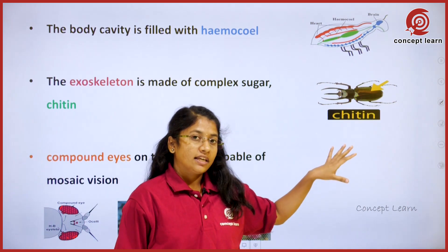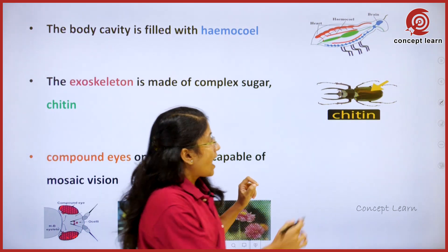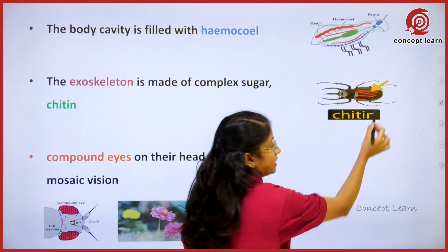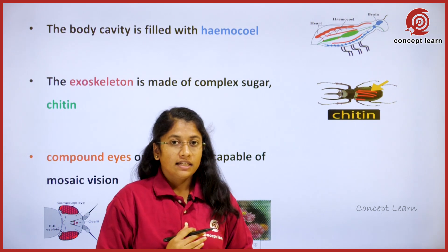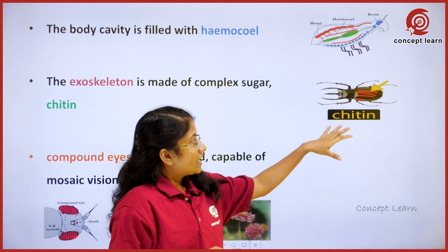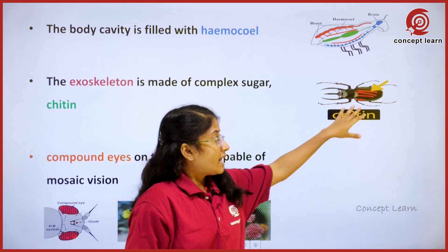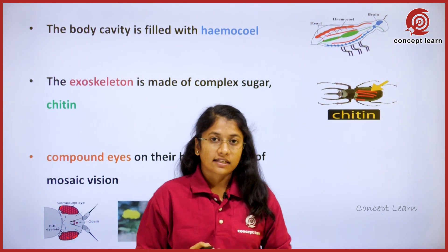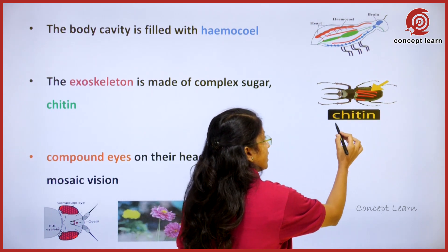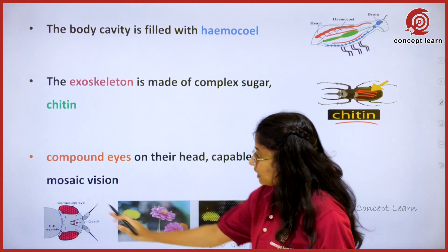Insects have an outer exoskeleton, as you can experience clearly in the case of vivians and bugs. If we touch it, we can feel the hard structure present over the body. This hardened structure is mainly due to the presence of the chemical compound chitin.